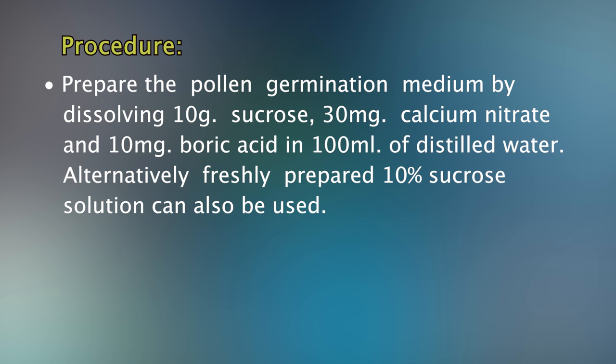Now let me demonstrate the procedure for conducting this exercise. First, we are supposed to prepare the pollen germination medium by dissolving 10 grams sucrose, 30 milligrams calcium nitrate, and 10 milligrams of boric acid in 100 ml of distilled water. Alternatively, a freshly prepared 10 percent sucrose solution can also be used.